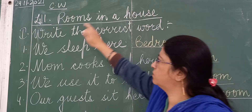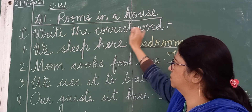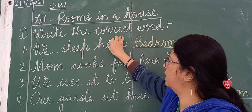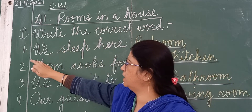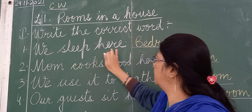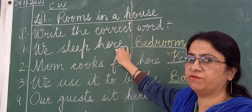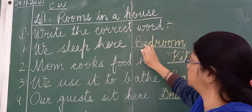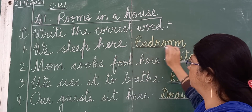Number 1. Write the correct word. We sleep here. So which is the room where we sleep? It is a bedroom. We sleep here in the bedroom.